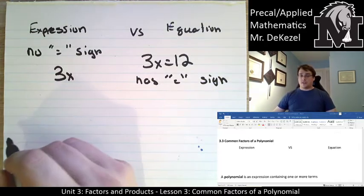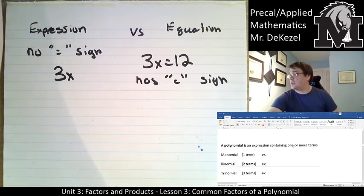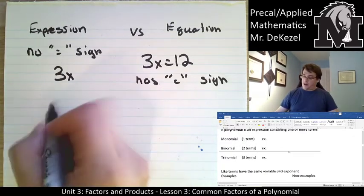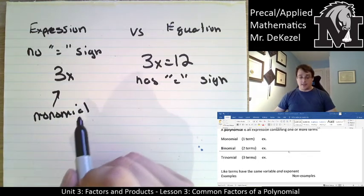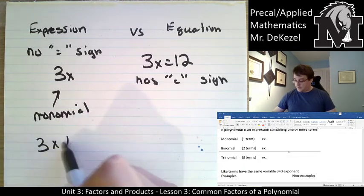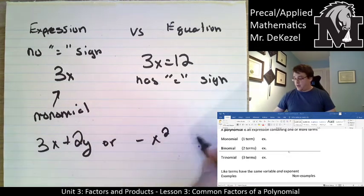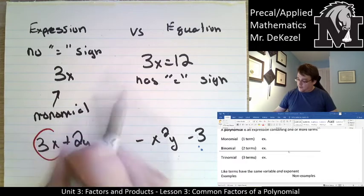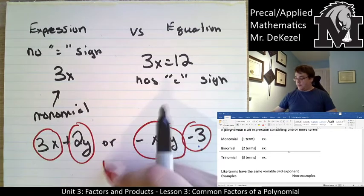So we're going to talk about expressions. A polynomial is an expression containing one or more terms. A monomial has one term — 3x is a monomial, there's only one piece to it. A binomial has two terms, something like 3x plus 2y, or minus x squared y minus 3. You can see that there are two parts to each of those, so those are binomials.